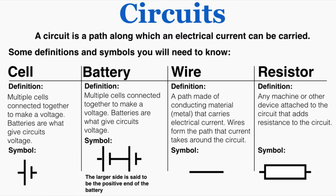This video is going to be about circuits and the basic notation we use to describe them. A circuit is a path along which an electrical current can be carried. I'm going to have you take a moment to copy down these definitions — just pause the video — because these are the basic building blocks of a circuit. Specifically, batteries, wires, and resistors are what we're going to be focused on in this video.